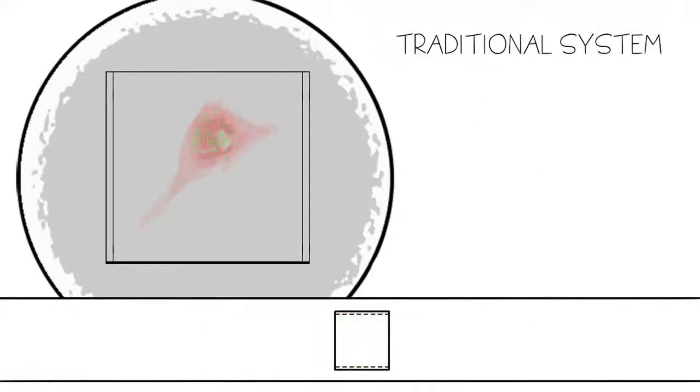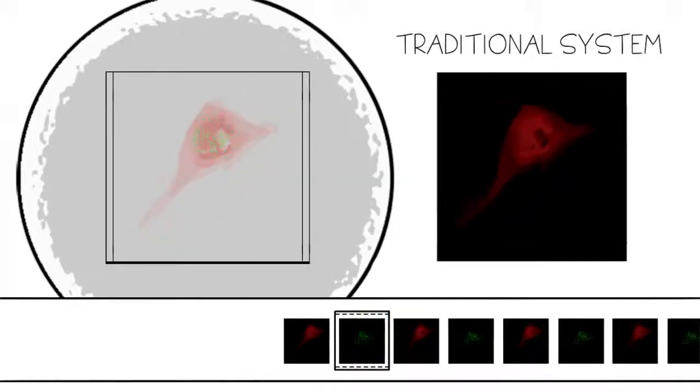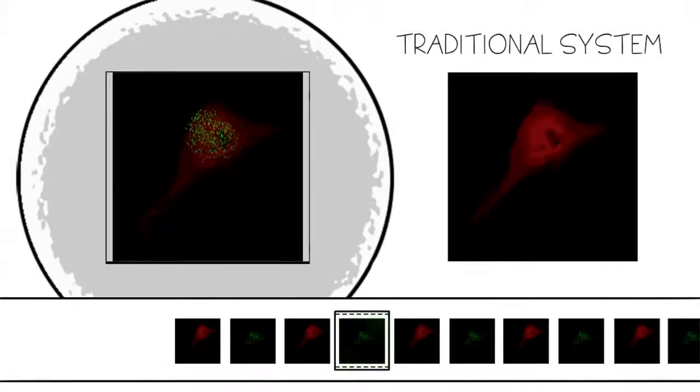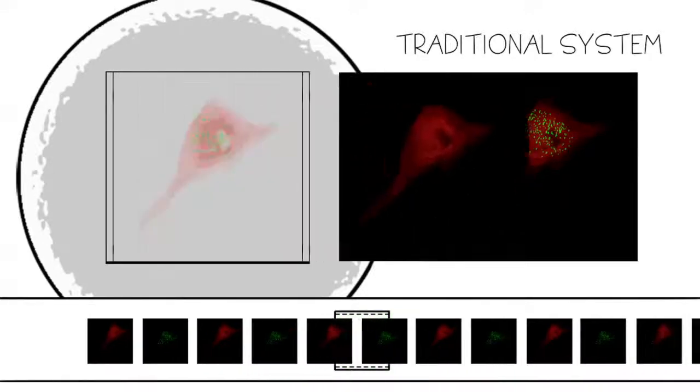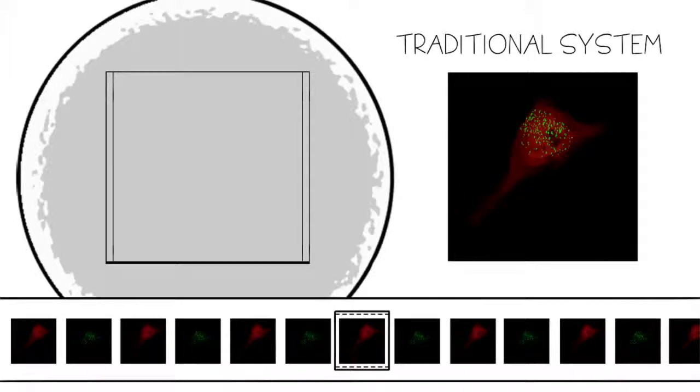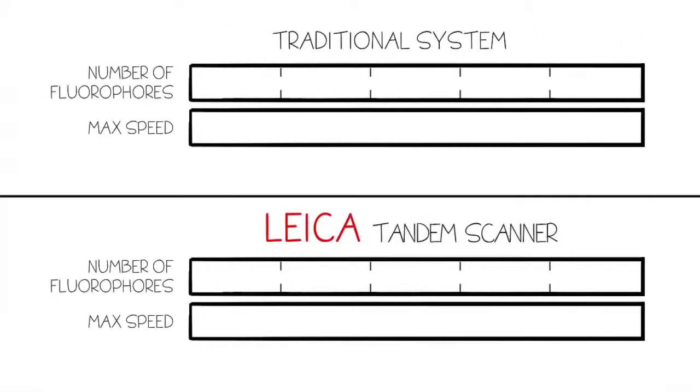Typically, a spinning disk confocal is used to generate high-speed images. However, a major limitation is that sequential acquisition is required to produce multi-channel images. Therefore, the imaging rate for a spinning disk is reduced by the number of fluorophores in a sample.